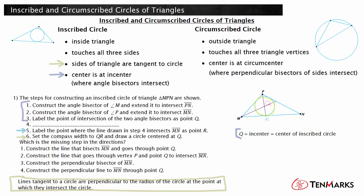Because of this, to find the radius of an inscribed circle, you draw a perpendicular line to one of the sides from the incenter. So, step 4 must be: construct the perpendicular line to MN through point Q, which is choice 4. While choice 3 also mentioned perpendicular, the perpendicular bisector of the triangle side will not always go through the incenter.